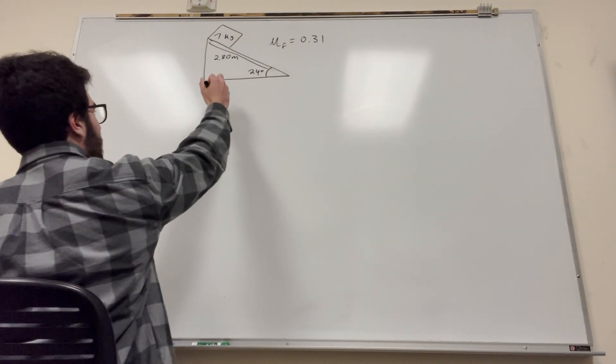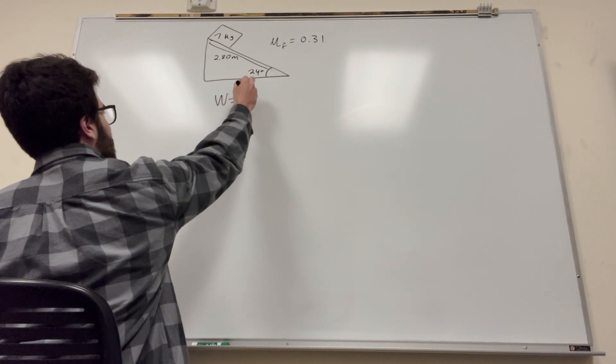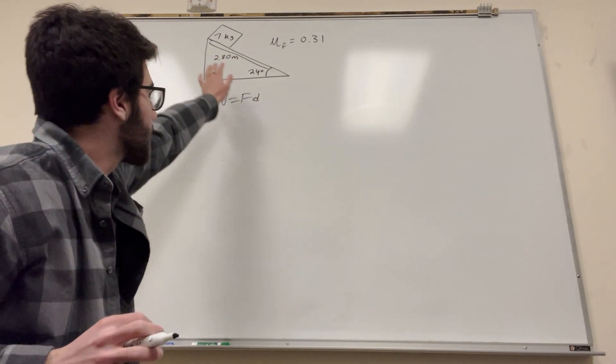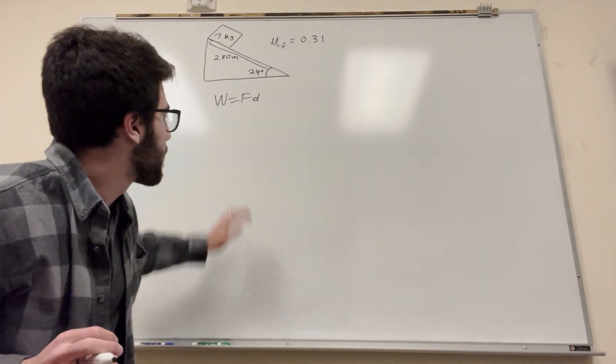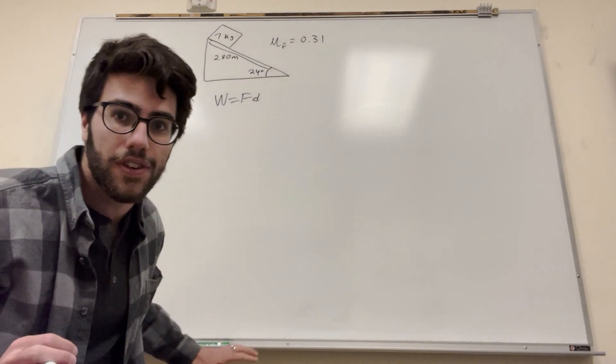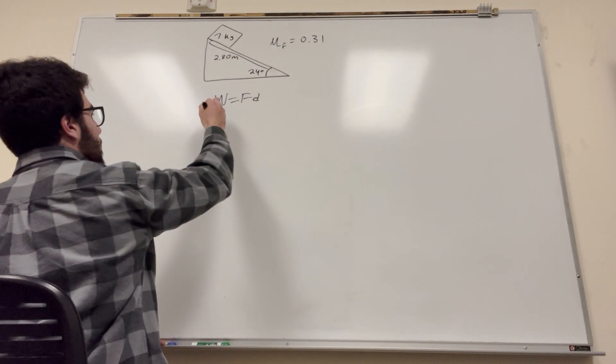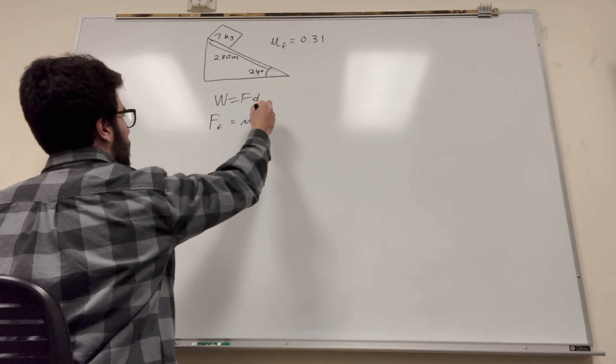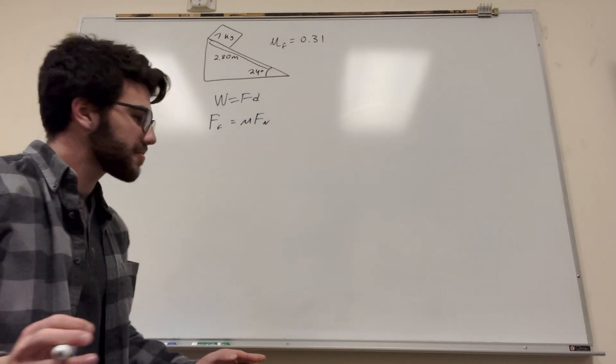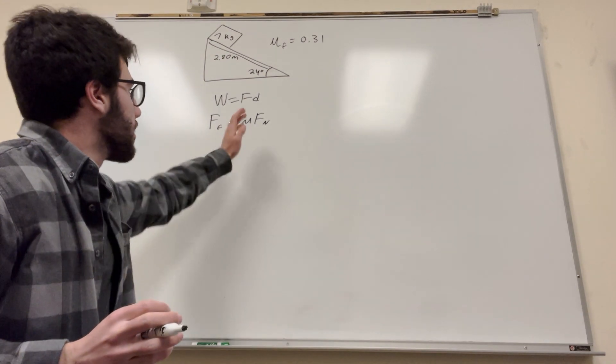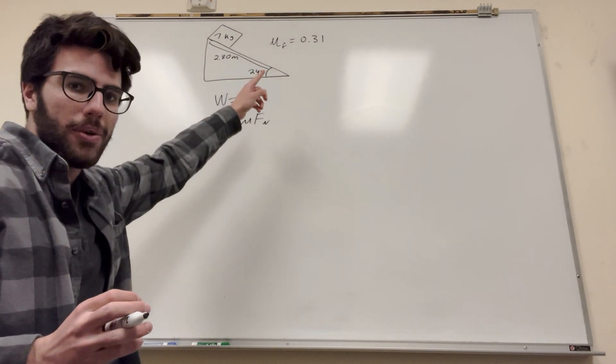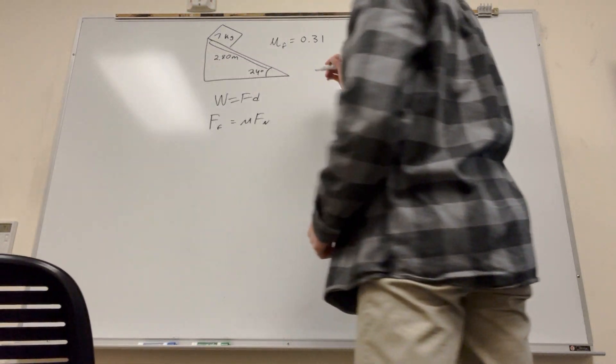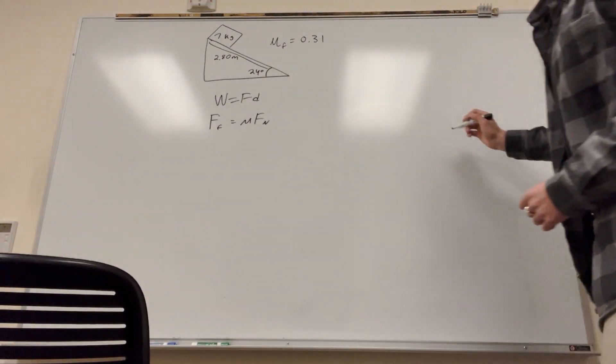Okay, let's get started. So we know that work is equal to force times distance, right? So to do this, we know the distance, it's 2.8 meters. To find work, we need to find the force of friction. So the force of friction is equal to the coefficient of friction times the normal force. We have the coefficient at 0.31, now we need the normal force. Let's draw a force body diagram, always a good thing to get started on.